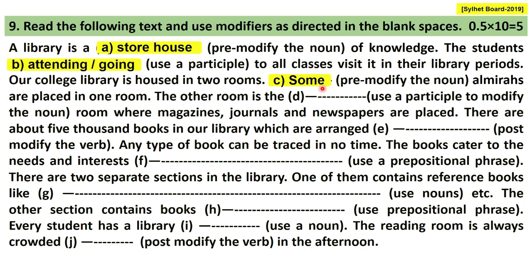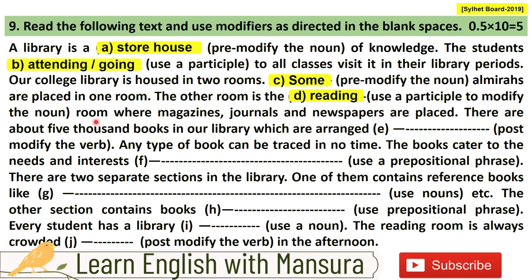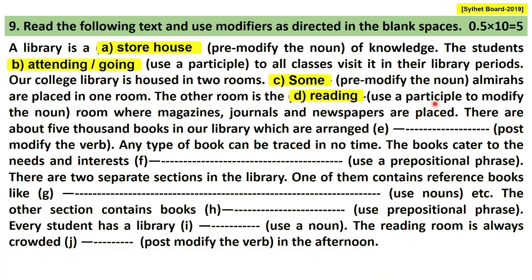The other room is the reading room. You can use a participle here — present participle or past participle. 'Reading' is an -ing form, so 'reading room' — 'reading' is the present participle acting as premodifier, and 'room' is the head word. Where magazines, journals, and newspapers are placed.